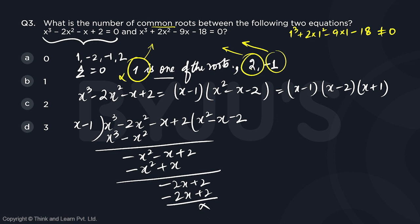If you now put 2: 2³ + 2(2²) - 9(2) - 18. So 8 + 8 is 16, 16 minus a lot of negative will not be 0. So 2 is also not a common root.